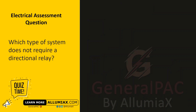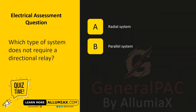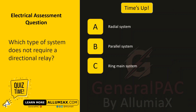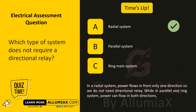What type of system does not require a directional relay? A: radial system, B: parallel system, C: ring main system. The answer is A — radial system. In a radial system, power flows in from only one direction, so we do not need a directional relay, while in parallel and ring systems power can flow in both directions.